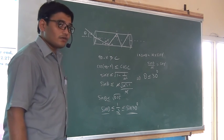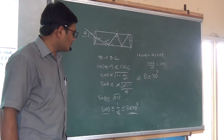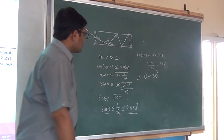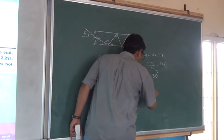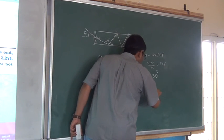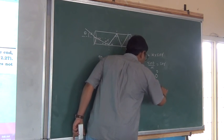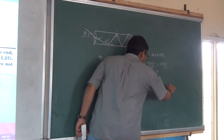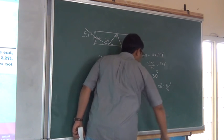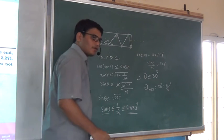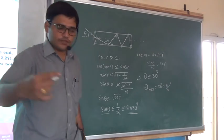What is the question asking to find? The maximum. So theta maximum is 30 degrees, or equivalently pi over 6 radians.